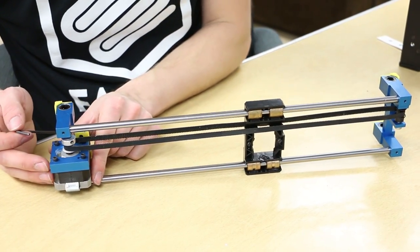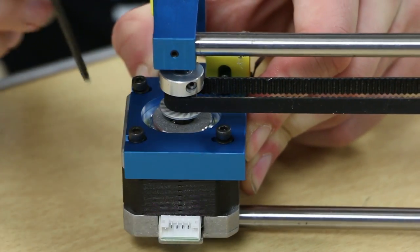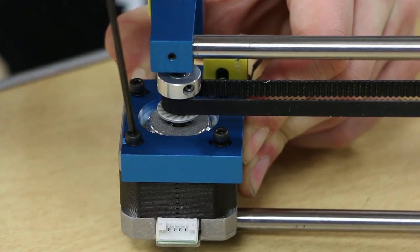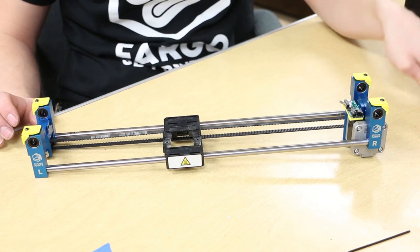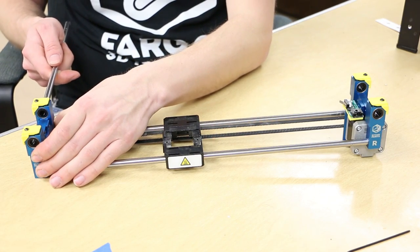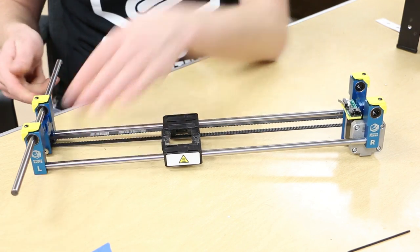Move back to the R linear bracket. Pull the motor so the belt becomes taut. Tighten the motor set screws. Once the belt is tight, flip the gantry system right side up and take the Y-axis linear rods and push them through the linear bearings.